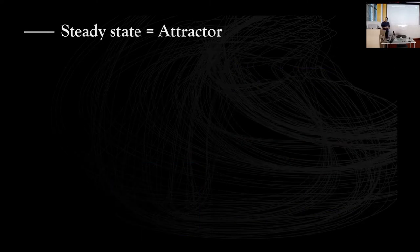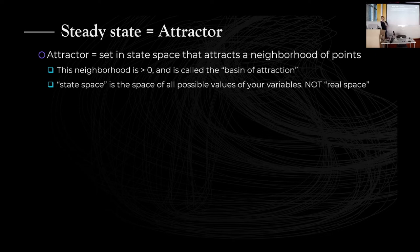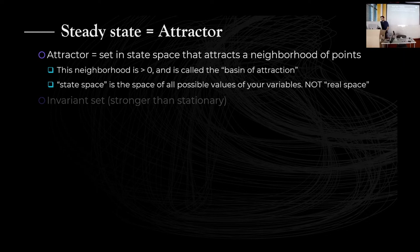With this theory, it is actually really easy to quantify a steady state. A steady state is an attractor. An attractor is simply a set in the state space that attracts a neighborhood of points, and this neighborhood is finite and greater than zero — it's called the Basin of Attraction. Please don't confuse state space with real space; think of the possible values of your variables, like combinations of temperature and humidity. Any set that attracts other points in the state space towards it, as time evolves, is an attractor.